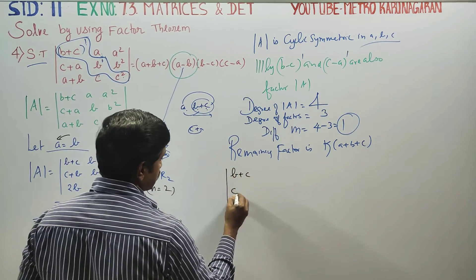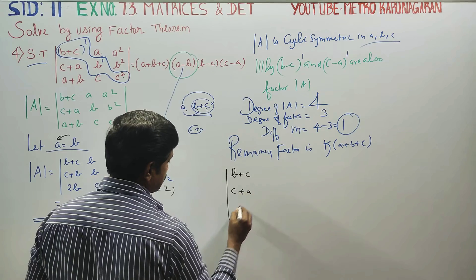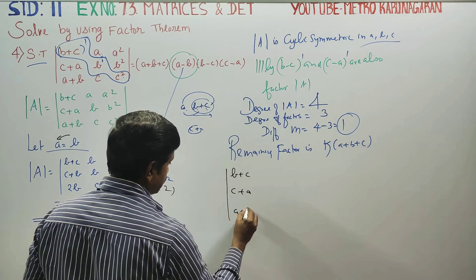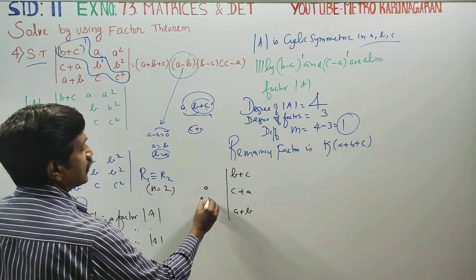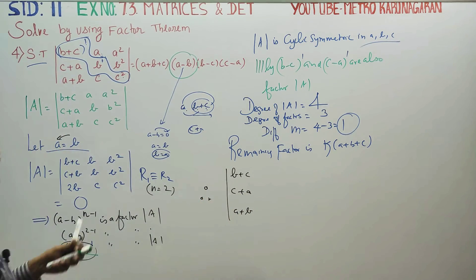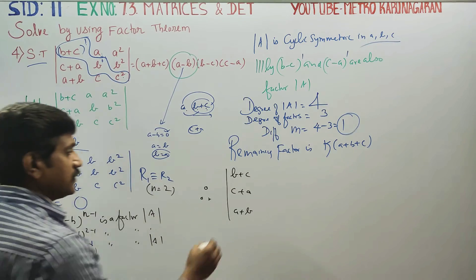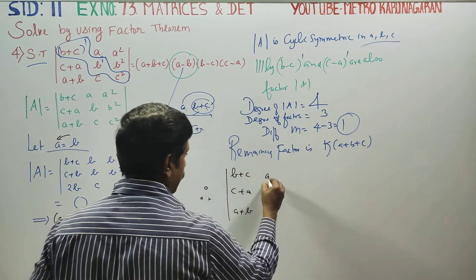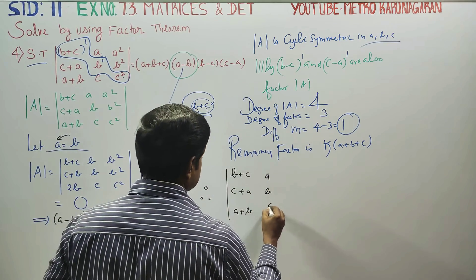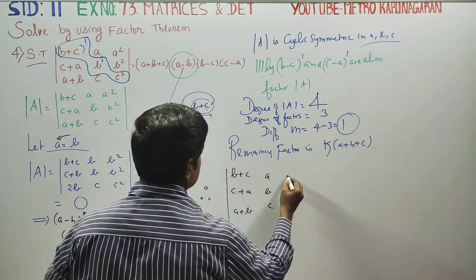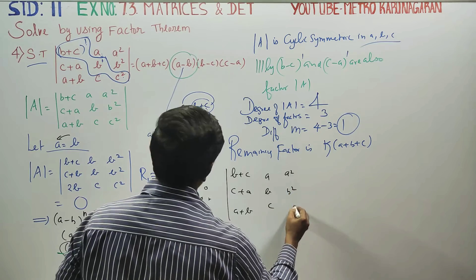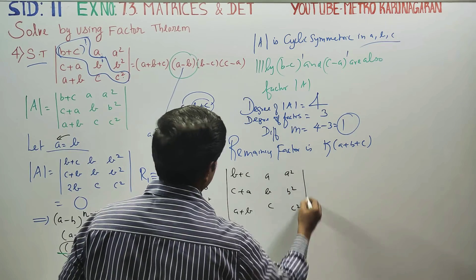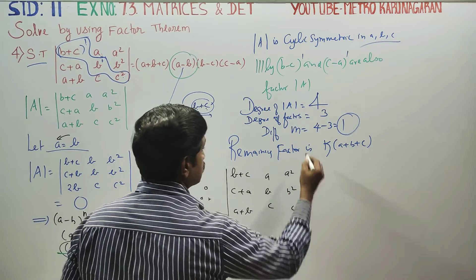The main structure is confirmed. The three factors (a−b), (b−c), (c−a) together with the remaining factor k(a+b+c) give us determinant A equals k(a+b+c)(a−b)(b−c)(c−a). We now need to find the value of k using rows (b+c, a, a²), (c+a, b, b²), (a+b, c, c²).